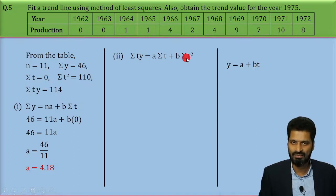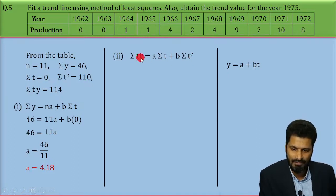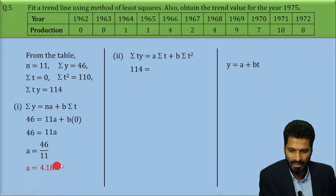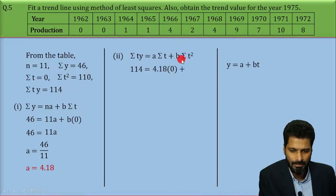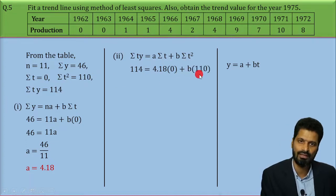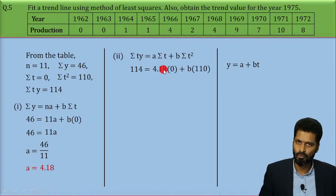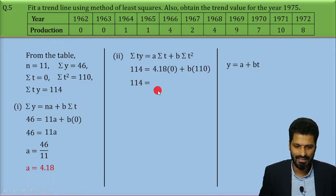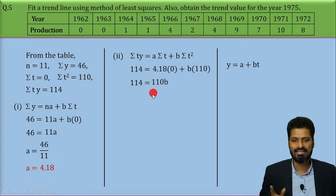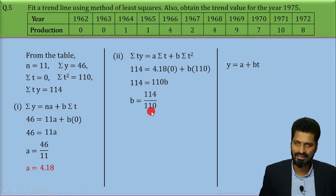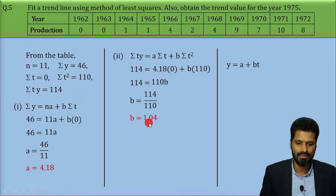Now using the second equation to get the value of b. Sum of ty = 114. Substituting: 114 = a·Σt + b·Σt² = 4.18 × 0 + b × 110. Since 4.18 × 0 = 0, we have 114 = 110b. Rearranging: b = 114 ÷ 110, which gives us b = 1.04.